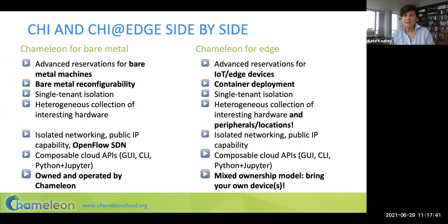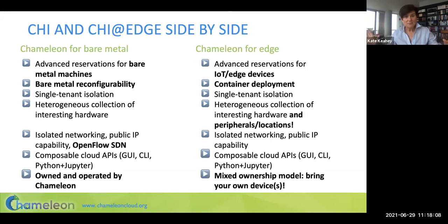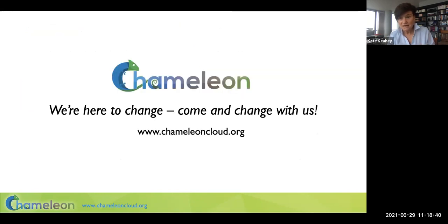A quick rundown of Chi@Edge side by side with the regular Chameleon offering. For Chameleon bare metal, we reconfigure bare-metal machines; for Chi@Edge, we reconfigure edge devices by deploying containers. Both implement single-tenant isolation — you get the node or device all to yourself. Both implement public IP assignment and provide the same interfaces. While Chameleon hardware is owned and operated on Chameleon sites, Chi@Edge provides a mixed ownership model — we give you some devices, but you can also add your own devices to the testbed in a shareable way.